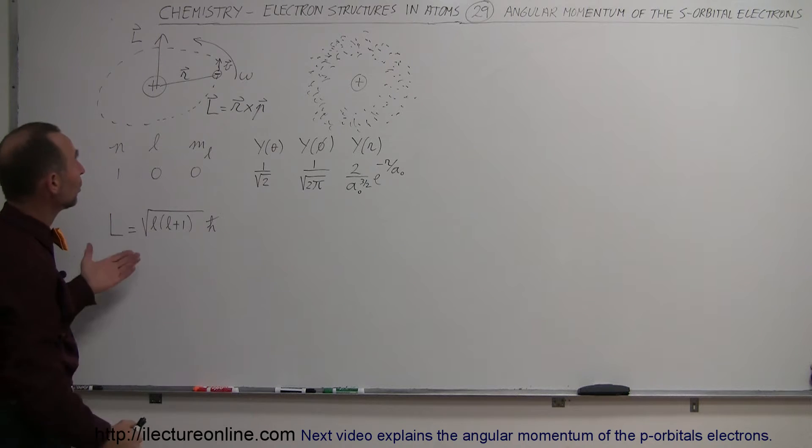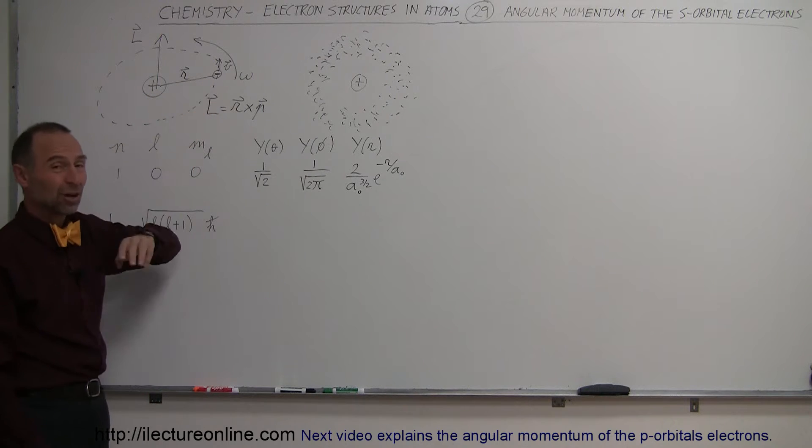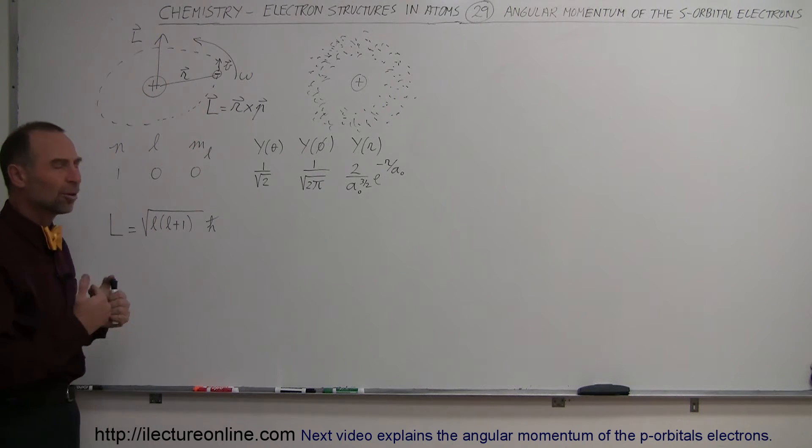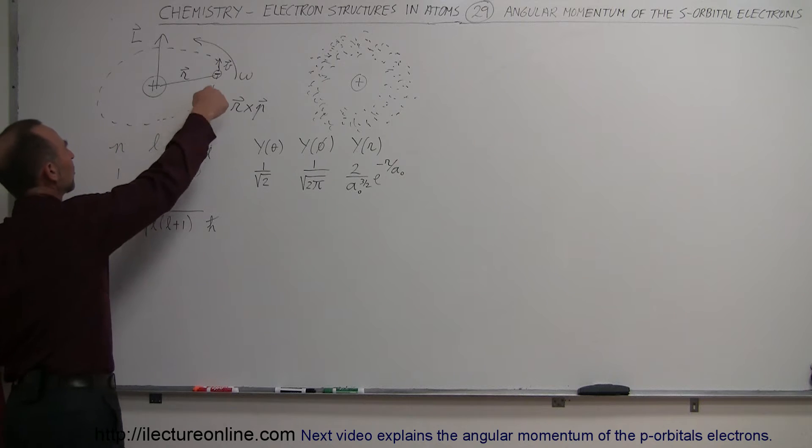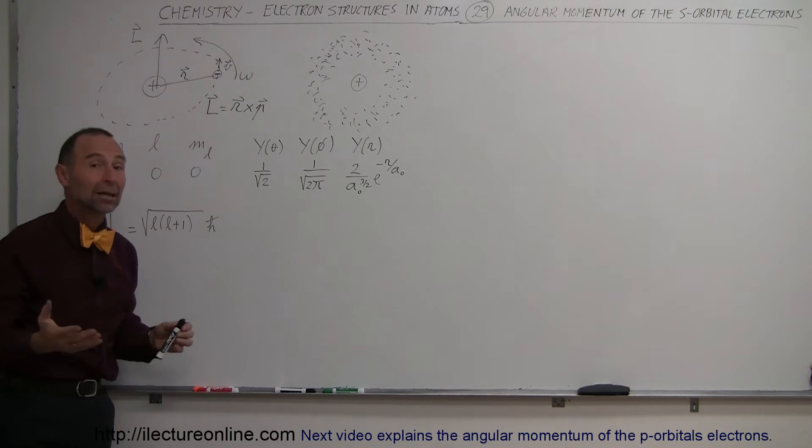Now, in the Bohr atom, which this is a drawing of, we have a single proton at the center in the nucleus and a single electron going around the nucleus. In the Bohr atom, we assume the electron was going around in an orbital path just like a planet goes around the sun.